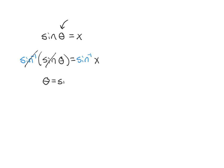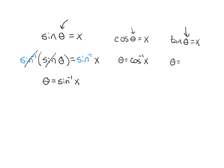The inverse sine of sine cancel out, and that will isolate your angle. So the angle is inverse sine of whatever is on the other side. This works for the other trig functions too: if you have cosine of theta equals x, then theta equals the inverse cosine of x; and if tan of theta equals x, then theta equals the inverse tan of x.